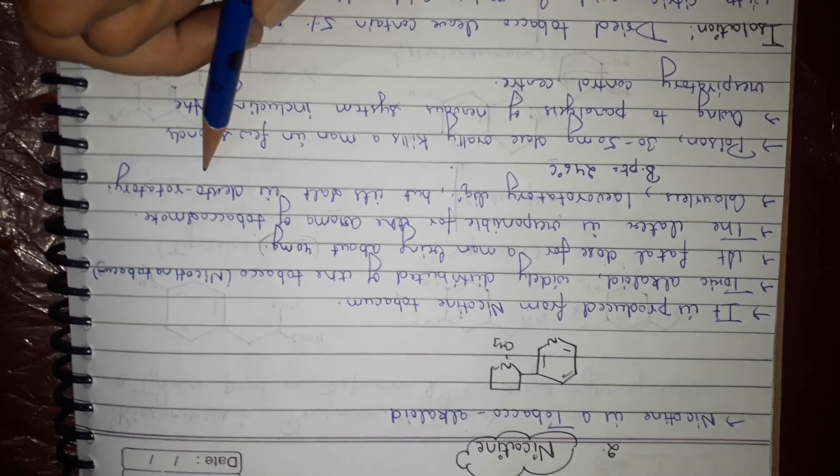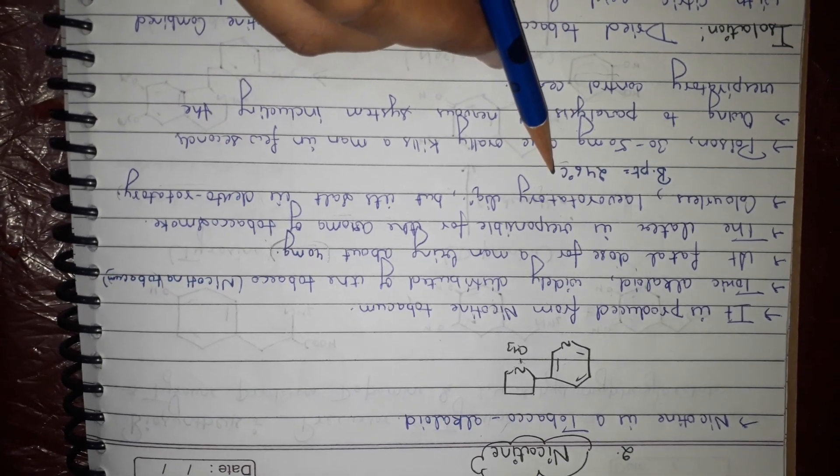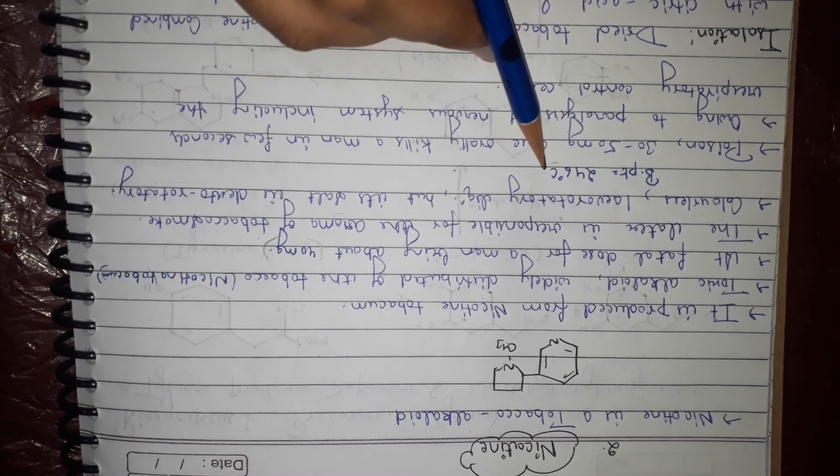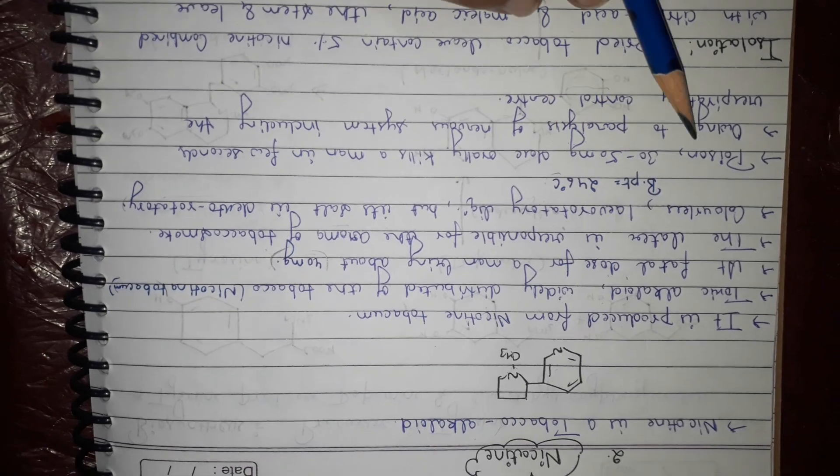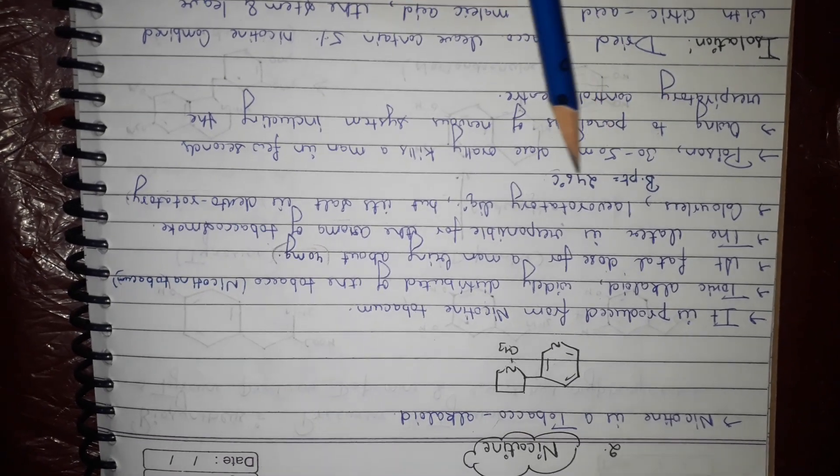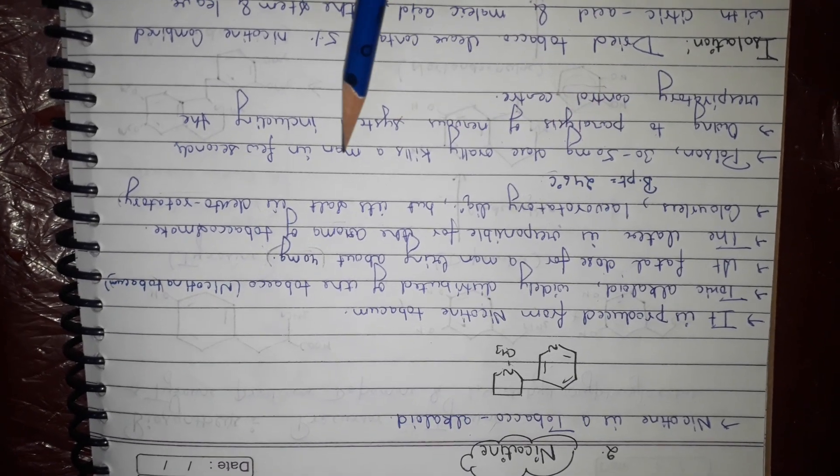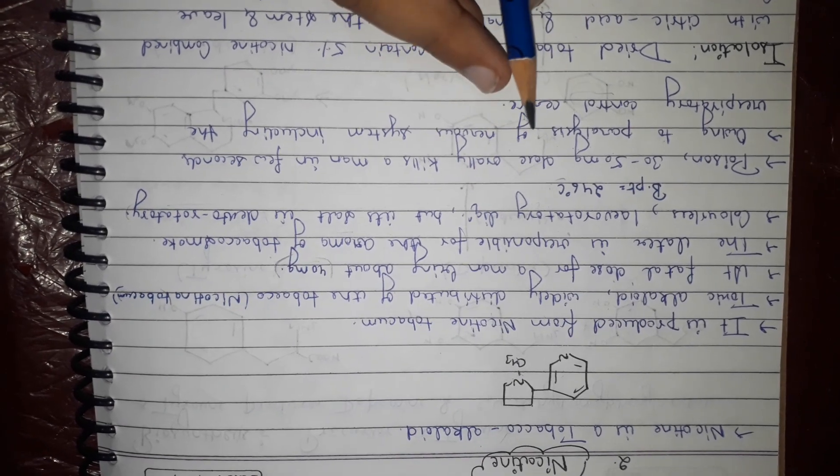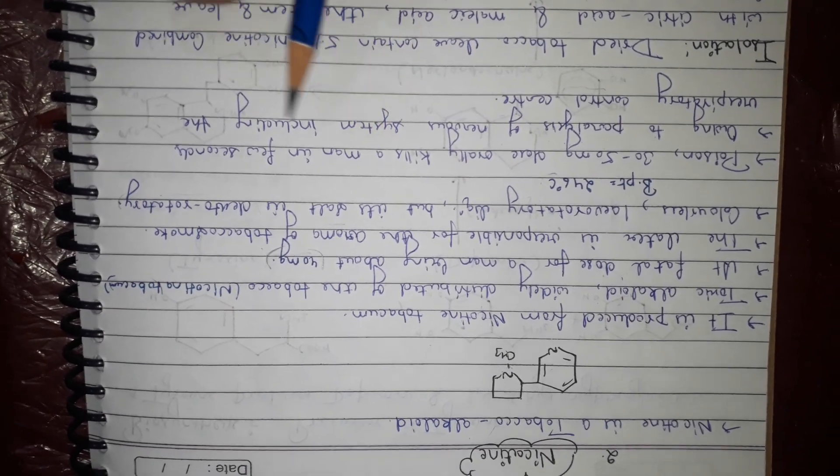Boiling point of nicotine is 246 degrees Celsius and it is a poison. 30 to 50 gram dose orally kills a man in few seconds owing to paralysis of the nervous system.